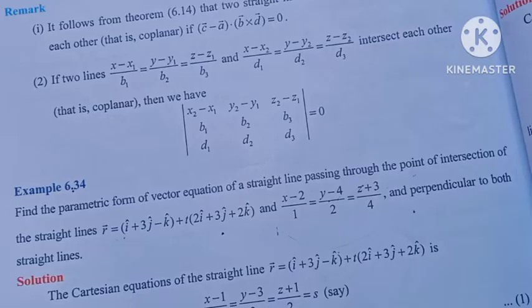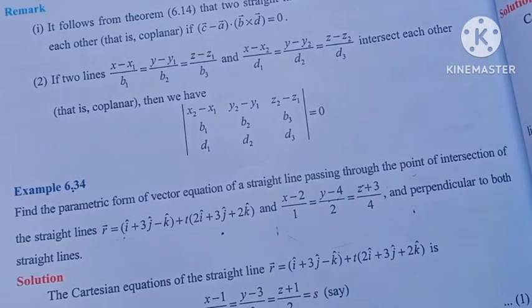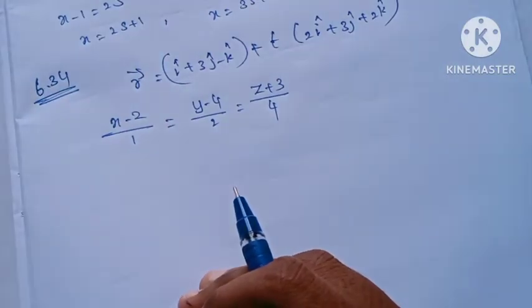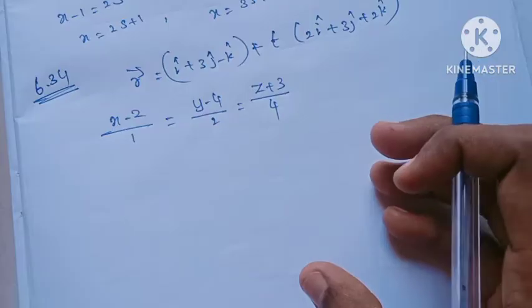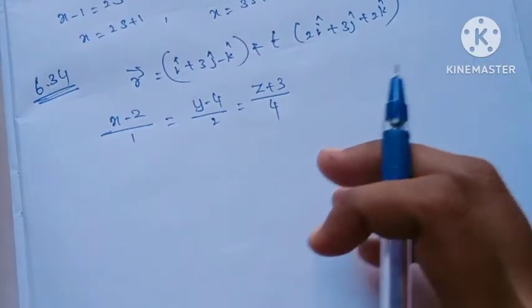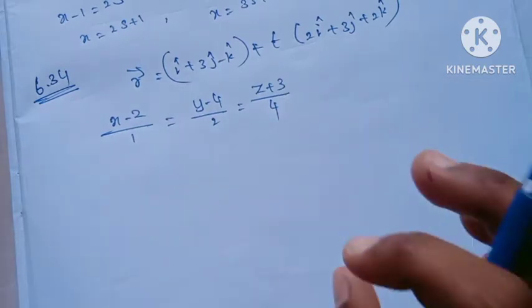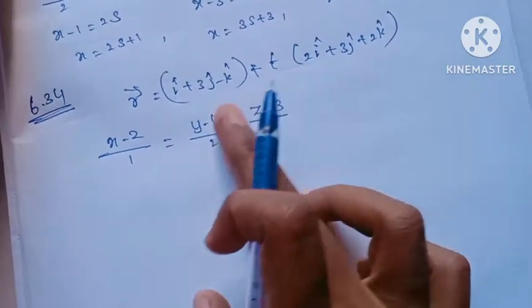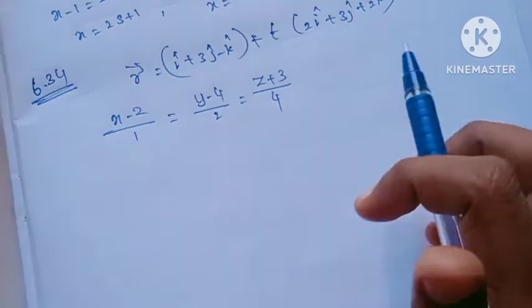We will find out the parametric vector equation — how to pass through the point of intersection of a line. The two lines are intersecting, and we will find out how to do it. We need to find two Cartesian equations from the same two straight lines.